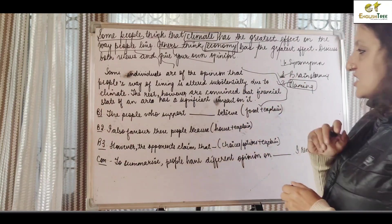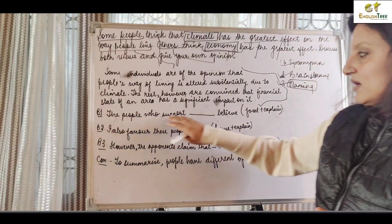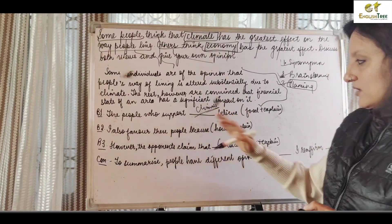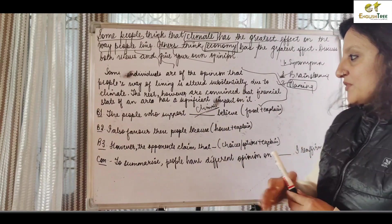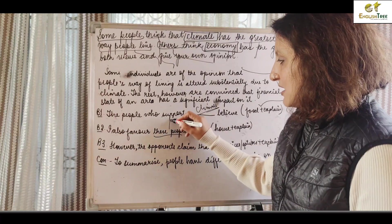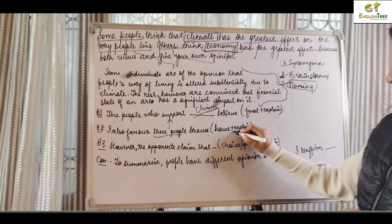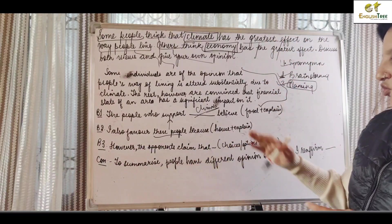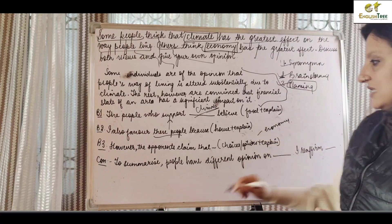This is how my structure will look like. BP1, the people who support - which I will talk about climate. So here you have a line that affects the climate. We will elaborate the food points here. In BP2, I also favor these people concerned about climate effects on living style because here we will explain the house points. BP3 however, the opponents claim that - opponents which is about economy. We will write these points here. And then conclusion.